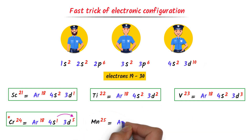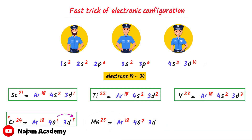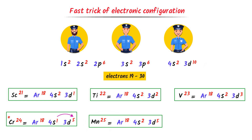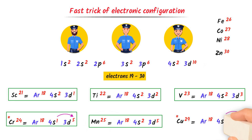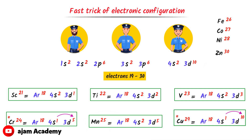Manganese has 18 in argon, 2 in 4s, and 5 in 3d. Similarly, we can configure iron (26 electrons), cobalt (27), nickel (28), and zinc (30). Copper is also a special case: argon (18) + 2 in 4s + 9 in 3d. One electron shifts from 4s to 3d, making 3d completely filled with 10 electrons, which is more stable. This is the electronic configuration of copper. Using this trick, we can easily write the electronic configuration of any element.